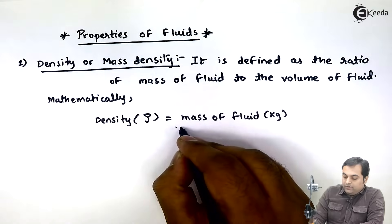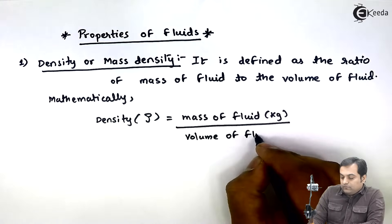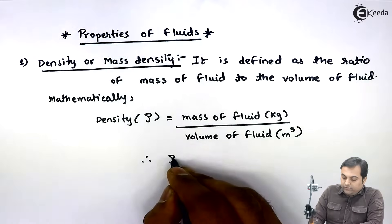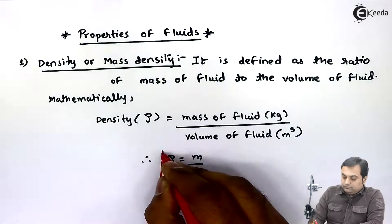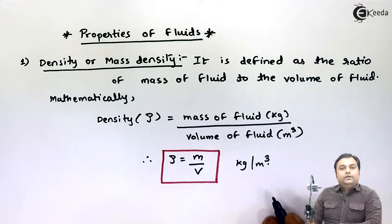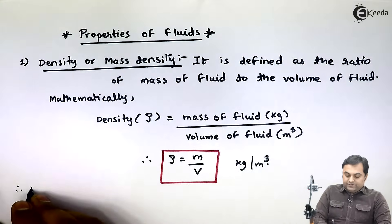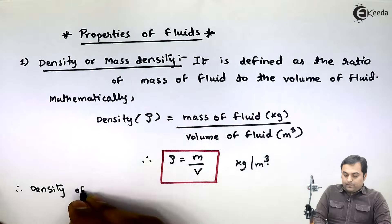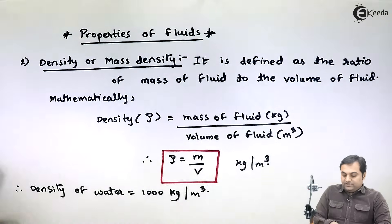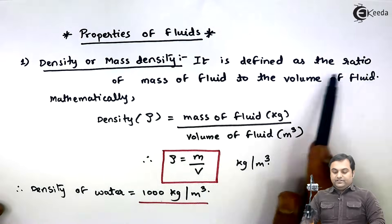Mathematically, density is denoted by rho and equals mass of fluid in kg divided by the volume of fluid in meter cube. So density rho equals mass upon volume, and the unit is kg per meter cube. The density of water, our standard reference liquid, is equal to 1000 kg per meter cube.